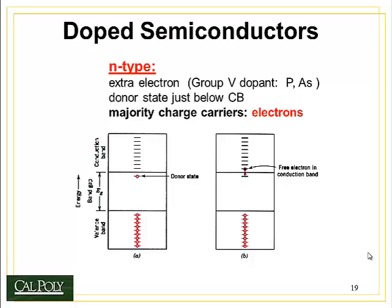N-type semiconductors are made by doping with group five elements such as phosphorus and arsenic, with phosphorus being one of the most common. By adding phosphorus or arsenic, you add an extra electron, because silicon is group four and normally has four electrons in its valence band. The fifth electron occupies what's called the donor state in the band gap, typically at a high energy level close to the conduction band. With a little thermal excitation — which can happen easily at room temperature — the electron jumps from the donor state into the conduction band and becomes a free electron capable of carrying electrical charge. In this case, the majority charge carriers are electrons.